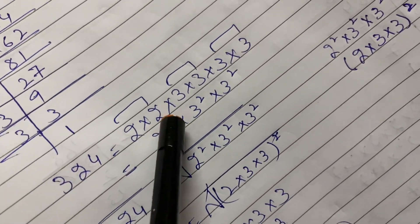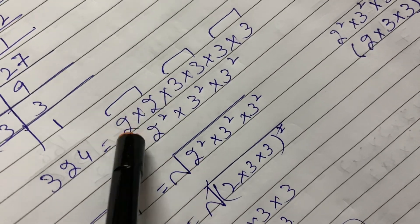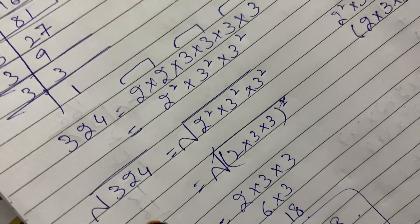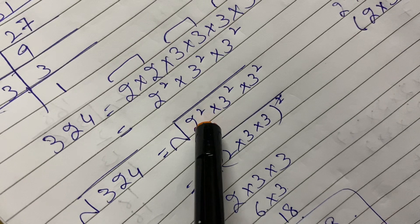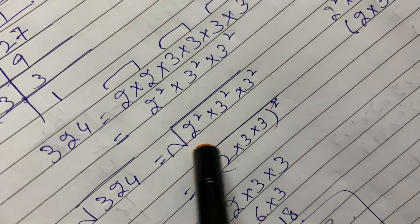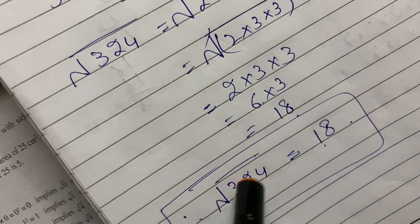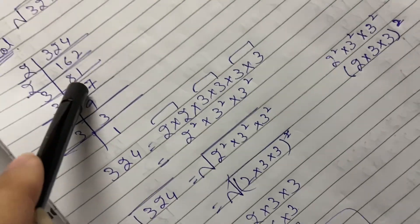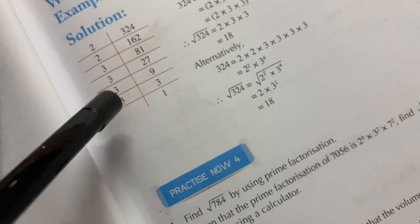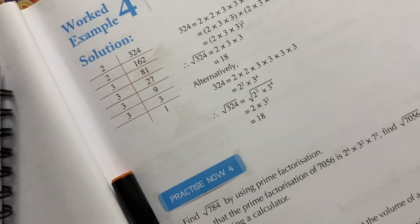We write 324 = 2 × 2 × 3 × 3 × 3 × 3. Then we make pairs: 2 × 2 = 2², 3 × 3 = 3², and 3 × 3 = 3². We apply the square root: square root of 324 = square root of (2 × 3 × 3)² = 2 × 3 × 3. That gives us 2 × 3 = 6, and 6 × 3 = 18. So the square root of 324 is 18. These are all prime numbers used as factors. Take care, Allah Hafiz — stay safe and healthy.